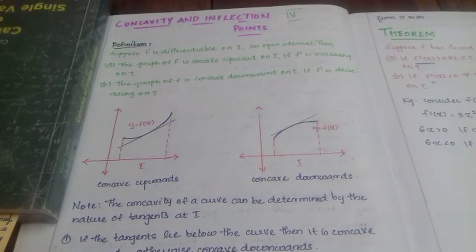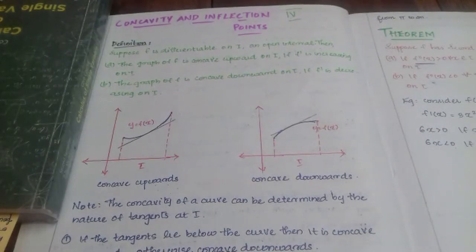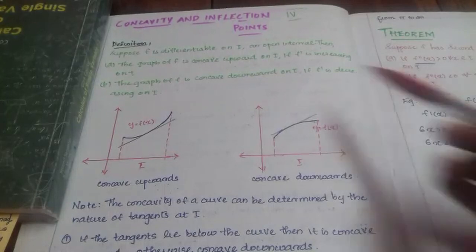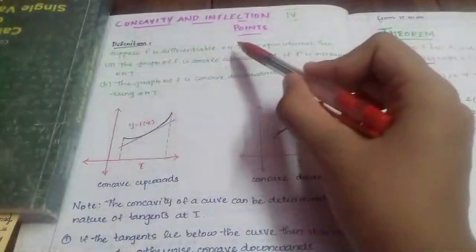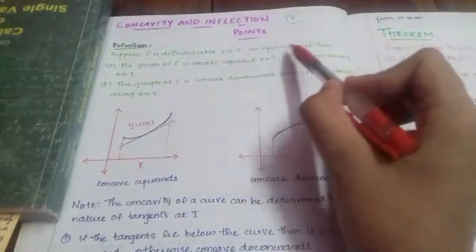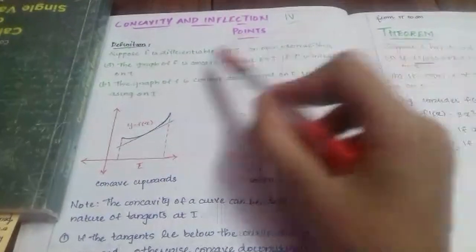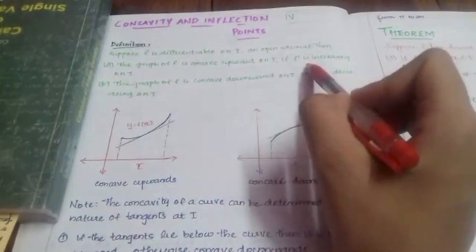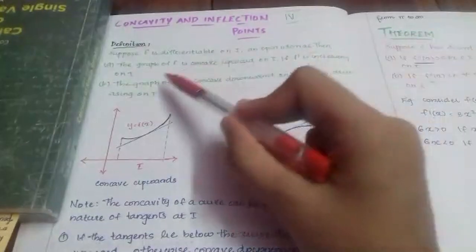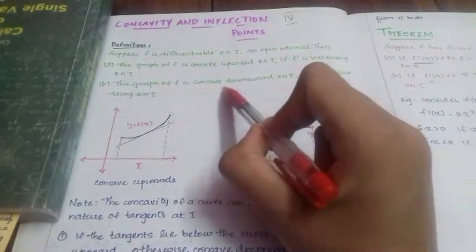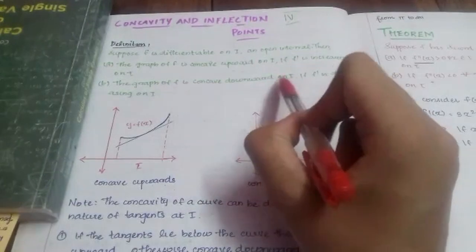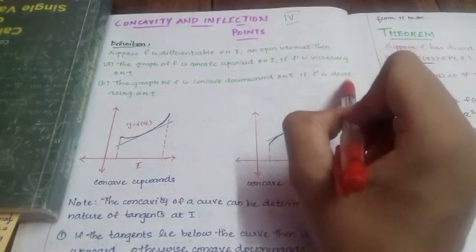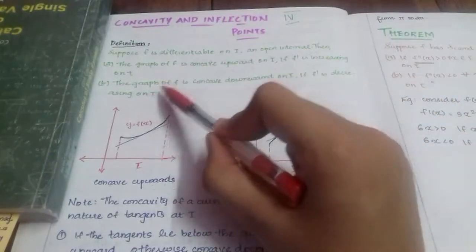Let us discuss the topic of concavity and inflection points. Suppose f is differentiable on i, an open interval. The graph of f is concave upward on i if f' is increasing on i. The graph of f is concave downward on i if f' is decreasing on i.